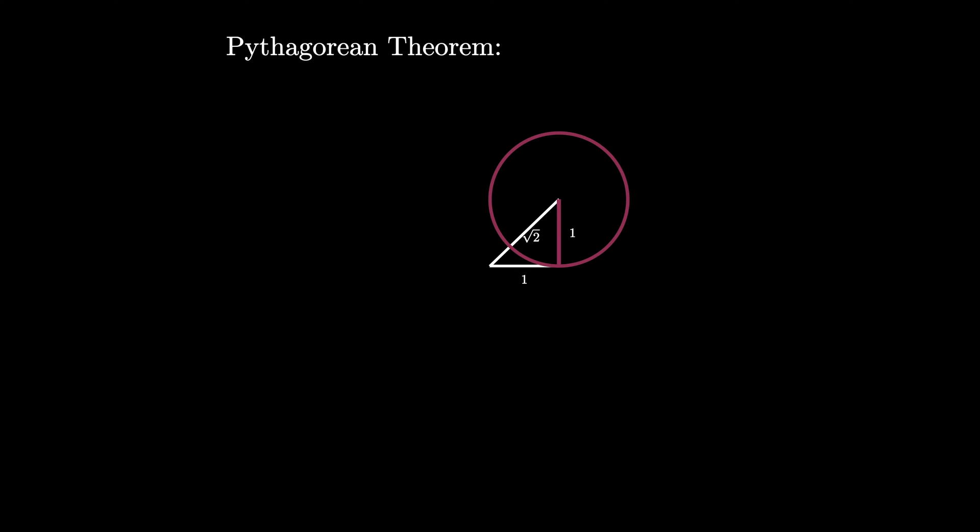Now use the straightedge and compass to draw a line segment of length 1 that is perpendicular to the diagonal of length √2. Connect the endpoints again, and now we have a new length A. This time by the Pythagorean theorem, we can determine that A² = 3, so A = √3.